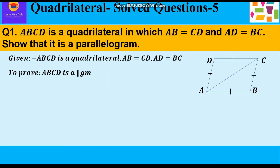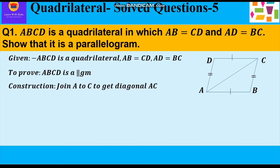To prove that a quadrilateral is a parallelogram, always remember we need to prove that alternate angles are equal, so that we can say the pair of opposite sides are parallel. When the alternate interior angles are equal, the opposite sides are parallel and hence it's a parallelogram. To prove alternate angles equal, we prove the two triangles formed by the diagonal are congruent, so their corresponding parts are equal and hence the alternate angles are equal.